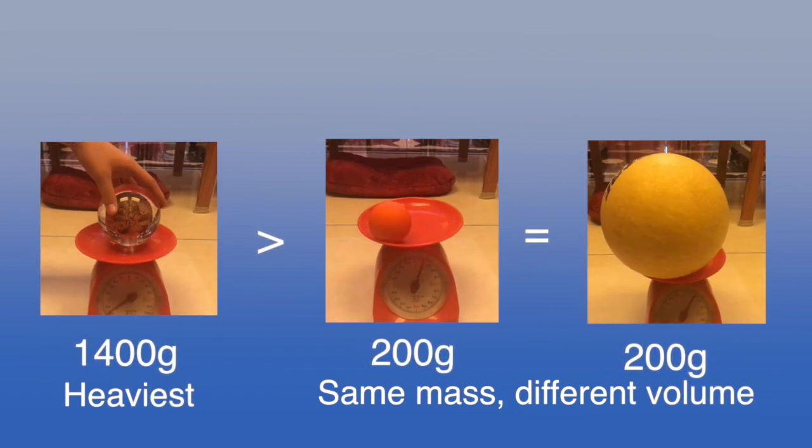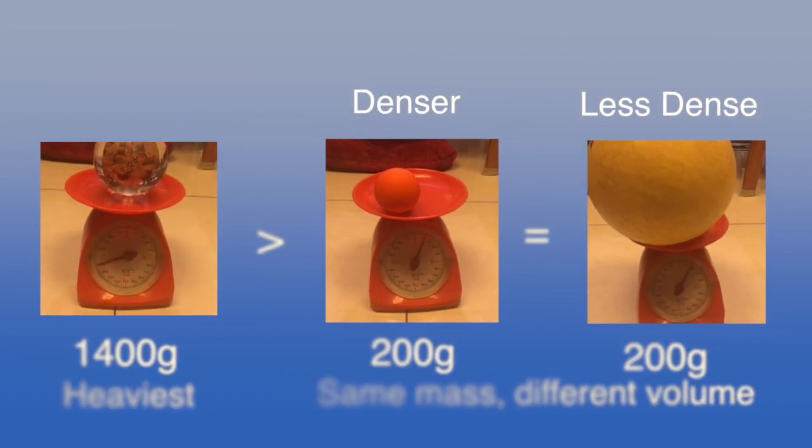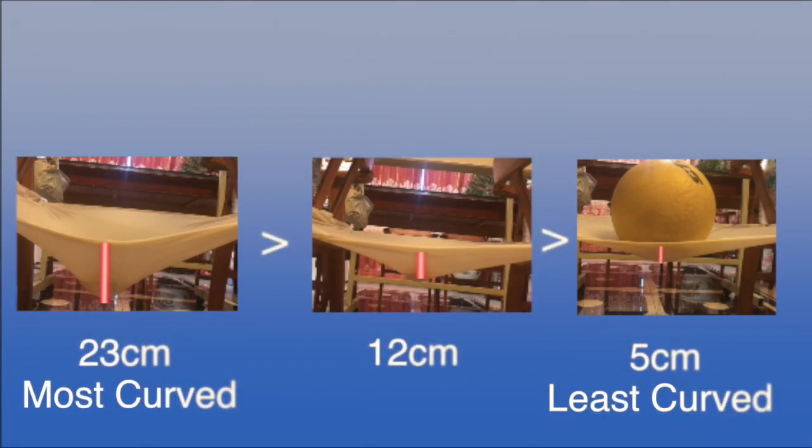Heavier objects curve space-time greater, and more curved space-time attracts objects quicker. Note that the size of object doesn't matter. It is density that decides the gravity. And that is why tiny black holes have way greater gravity than bigger Jupiter, which is composed of lighter materials, gases.